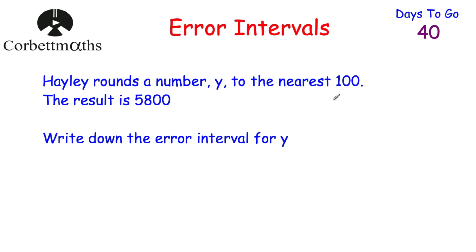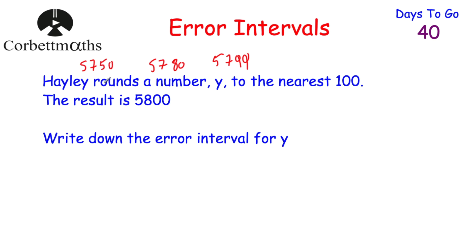Hayley's rounding a number to the nearest hundred and her answer is 5,800. She could have started with 5,800 itself, but it could be numbers lower than that: it could be 5,799, 5,780, or even 5,750 — all of those round to 5,800 to the nearest hundred. But it couldn't be anything lower than 5,750, because even a number just slightly under that would round down to 5,700. So y has to be bigger than or equal to 5,750.